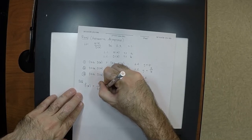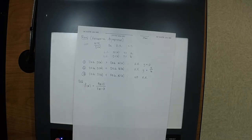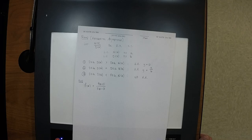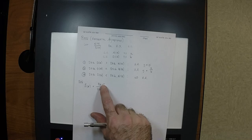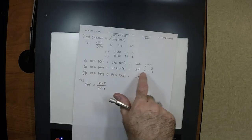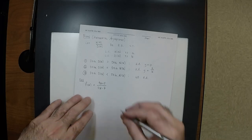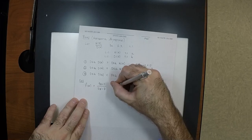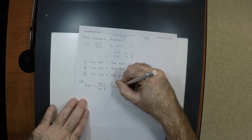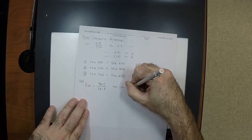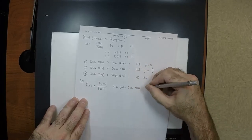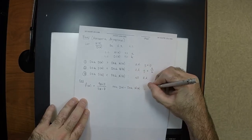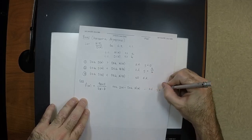How about f of x equals 4x plus 5 divided by 3x minus 7? What case are we in? Second case — when the degrees are the same. The degree of the numerator is 1, the degree of the denominator is also 1. So we're in the case when the degrees are the same, and there is a horizontal asymptote of y equals 4 over 3.